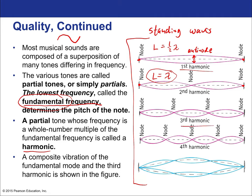We can consider the third harmonic, where L is equal to three-halves the wavelength. In other words, lambda is two-thirds of the length of the string. And then finally we have the fourth harmonic, where L is equal to twice the wavelength. See the trend — it's basically the order of the harmonic over two. So it's n over 2: first is one-half, second is two-over-two which becomes one, and when n is three it's three-halves.